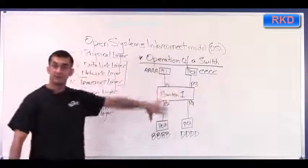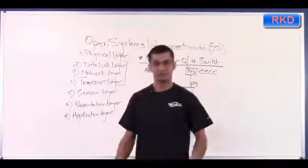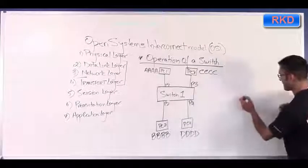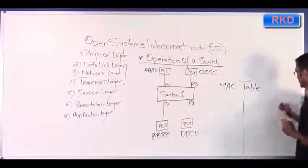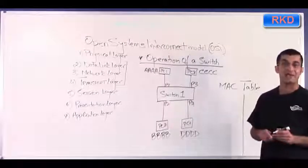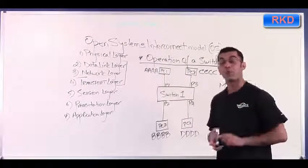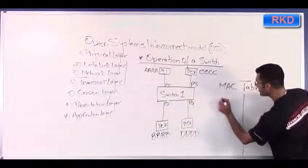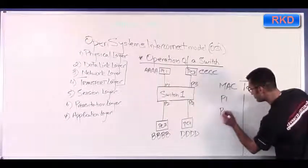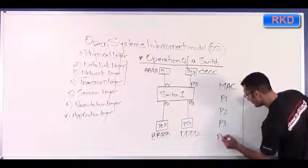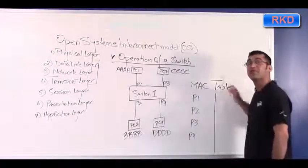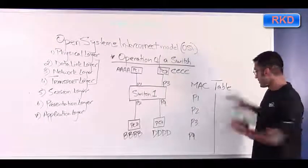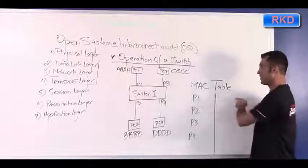Let me draw the MAC address table. The MAC address table is a listing of all ports on the switch — port 1, port 2, port 3, port 4, and any others — along with the MAC addresses of the devices connected at the other end of each port. So in front of P1 you'd have AAAA, and so on.